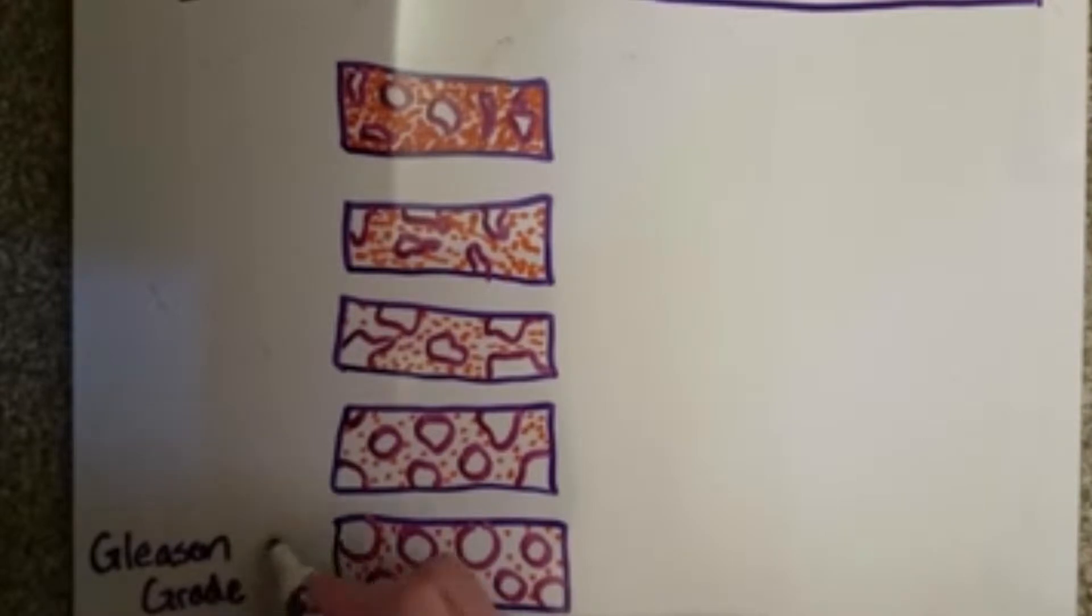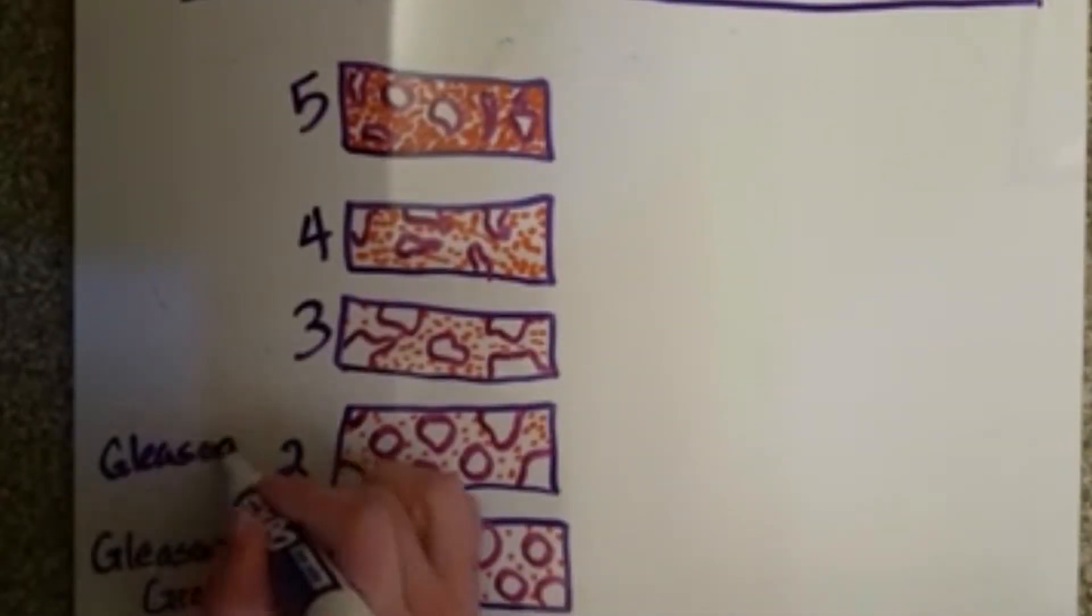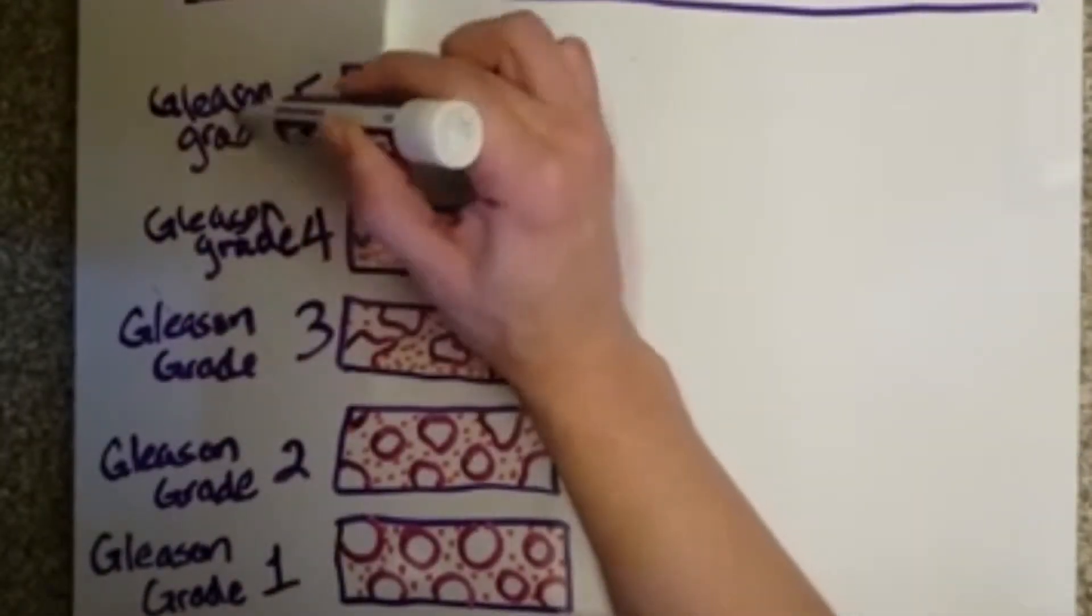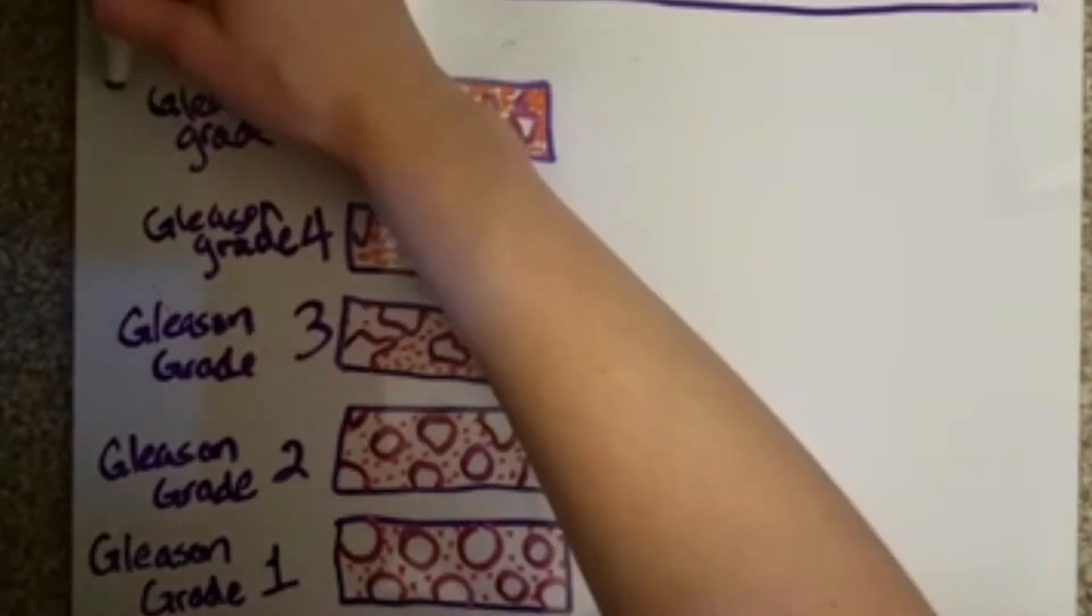For prostate cancer, the scale is one to five. For simplification, I will refer to the Gleason grade as GG from now on.